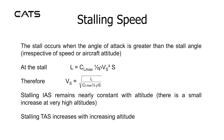Stalling speed. The stall occurs when the angle of attack is greater than the stall angle, irrespective of speed or aircraft attitude. At the stall, lift equals CL max × ½ρV²S. Therefore stalling speed is directly related to lift. Stalling indicated airspeed remains nearly constant with altitude, with a small increase at very high altitudes. Stalling TAS increases with increasing altitude.